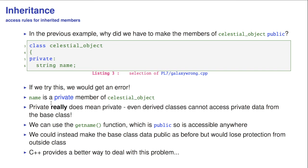Of course, you could just have used the getName function, which is public, so it's accessible anywhere. We could instead make the base class data public, as before, but would lose protection from the outside class. And, as usual, C++ provides a better way to deal with the problem we just highlighted.